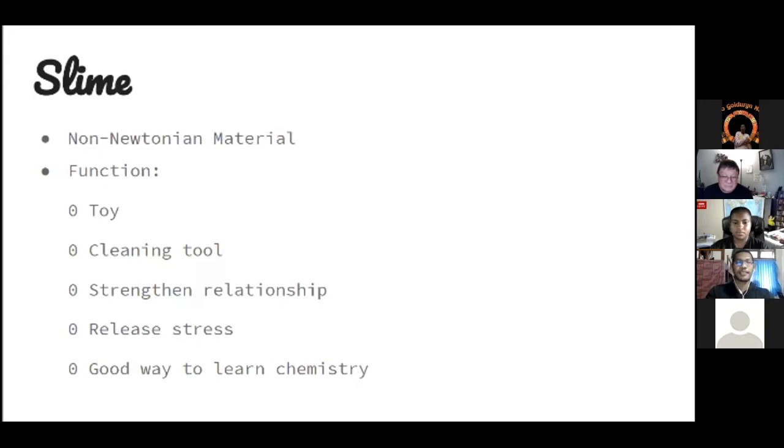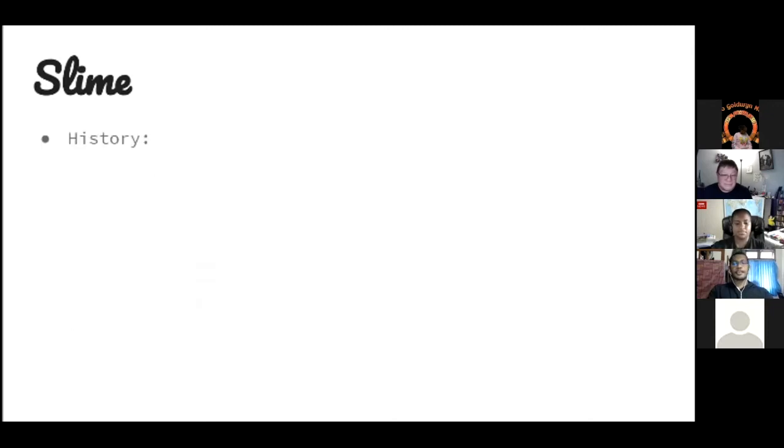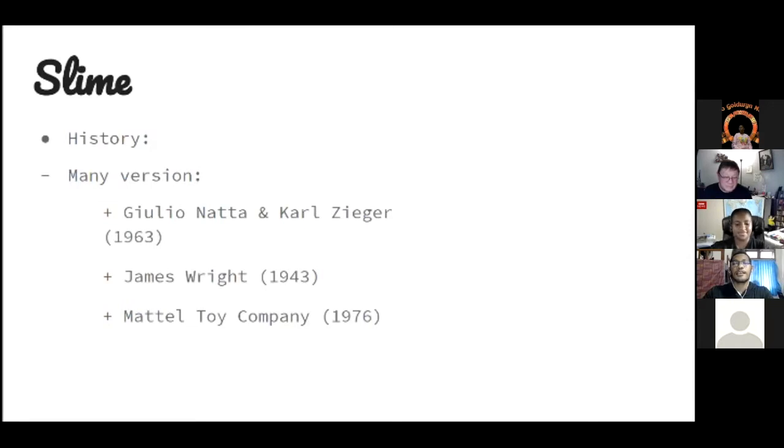There are some theories about how slime came in the first place. The first one is research done by two Nobel laureates, Giulio Natta and Karl Ziegler, in 1963. They studied about polymers.